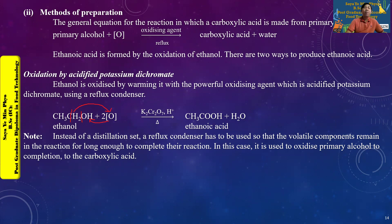If you want to use the reflux condenser, it has to be set up so that volatile components remain in the system. This is used to oxidize the primary alcohol so that the full oxidation to carboxylic acid can occur.